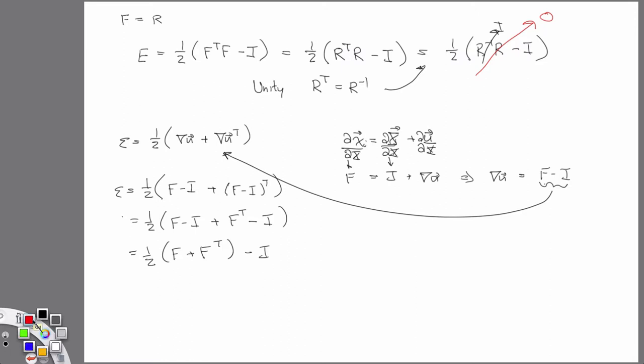Now let's plug in our rotation. So R equals F. Plug that guy in. And we have one half R plus R transpose minus two I.